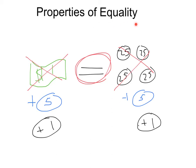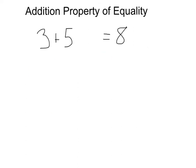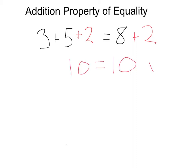In essence, the properties of equality is just saying: do the same thing on both sides of the equal sign. We are going to take a look at five different properties of equality, starting with the addition property. Here we have three plus five equals eight. Let's say I added two to the left side and two to the right side. Now I have three plus five plus two, which is ten, equals eight plus two, which is ten. Because we added the same thing to each side, we're still equal — that's the addition property.